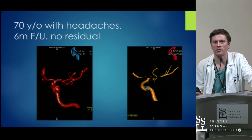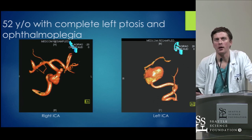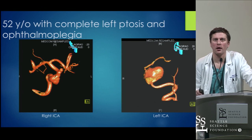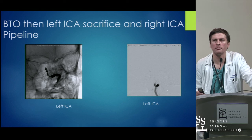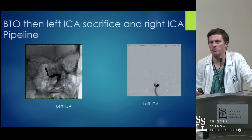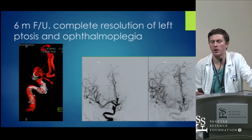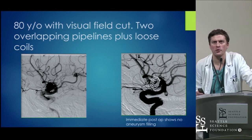Here's a 52-year-old with ptosis and ophthalmoplegia who had bilateral challenging aneurysms — a giant cavernous aneurysm on the left with ophthalmoplegia, and an ophthalmic and cavernous aneurysm on the right. We attempted to Pipeline the left side but were unable to get into the outflow, so we did a BTO, knowing our bailout option was to sac the carotid — which is what we did. She tolerated that well. We brought her back a few days later and Pipelined the right side. At six months she has good cross-filling to the contralateral side and both aneurysms are completely treated with a good clinical outcome.